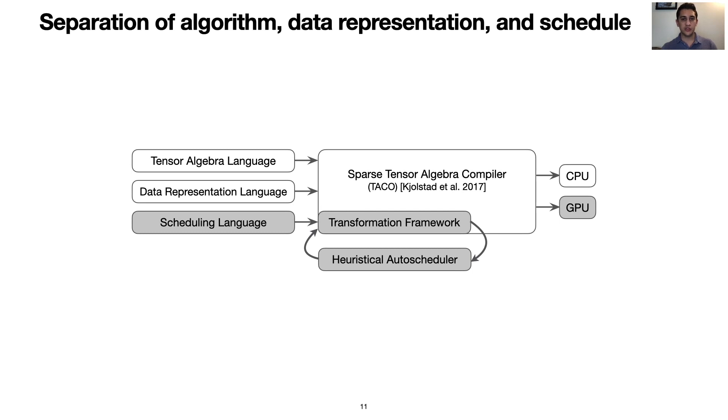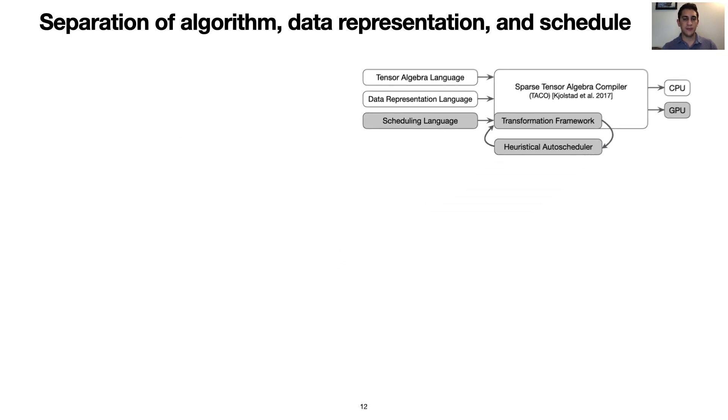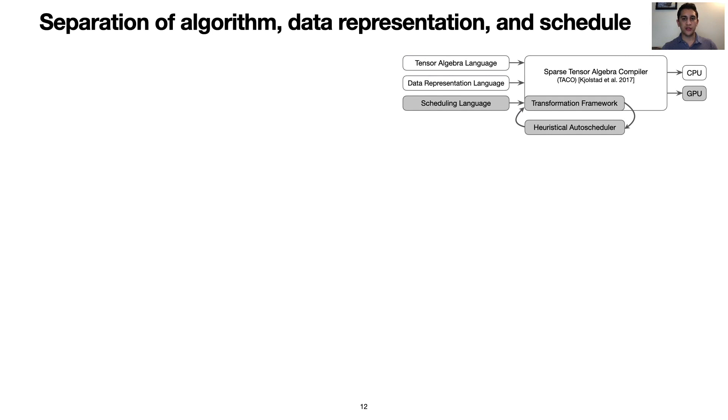I'll now quickly demonstrate the power of the separation of algorithm, data representation, and scheduling language with a small set of examples. For this example, we'll focus on matrix vector multiplication. We can first specify that both inputs should be dense. Providing an empty scheduling language yields the following simple code. This code iterates over all rows and columns of the matrix and multiplies by the dense vector.